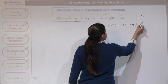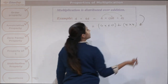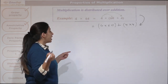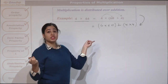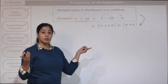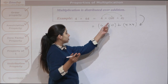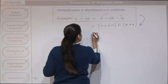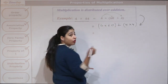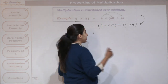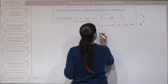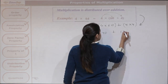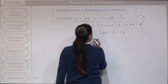This step is showing the distributive property — that multiplication is distributed over addition. This is our distributive property. Let us solve this to get our final answer: 240 plus 16.